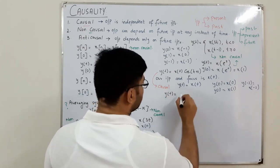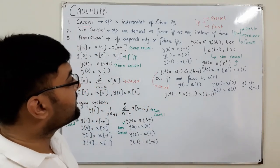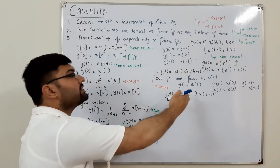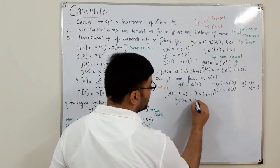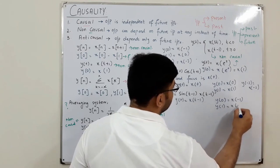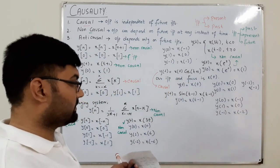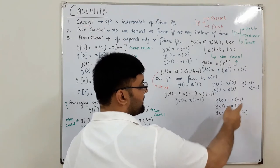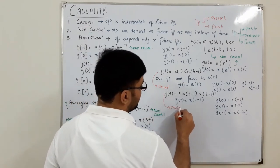For y(t) = sin(t-1) · x(t-1): our focus is x(t-1), not sin(t-1). Checking y(0) = x(-1), y(1) = x(0), y(-1) = x(-2) — all past values. The output depends only on past inputs, so this is a causal system.